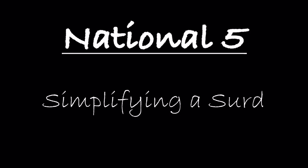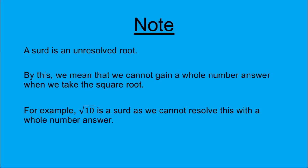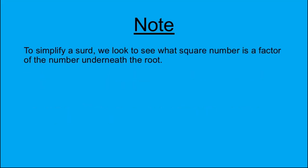This lesson will focus on simplifying surds from National 5. A surd is an unresolved root — we cannot get a whole number answer when we take the square root. For example, root 10 is a surd as we cannot resolve this with a whole number answer. To simplify a surd, we look to see what square number is a factor of the number underneath the root.